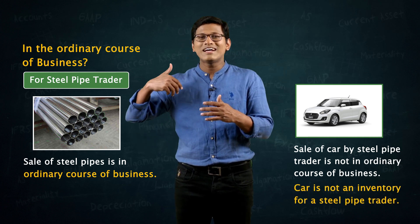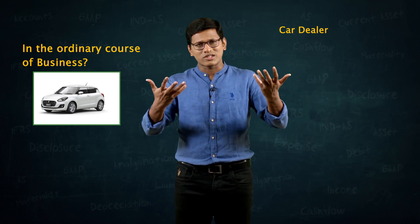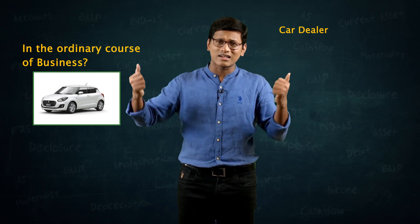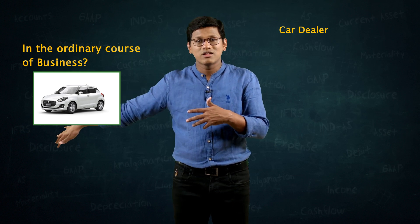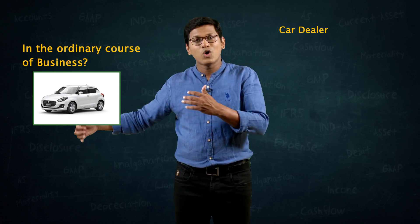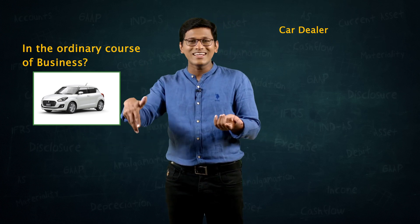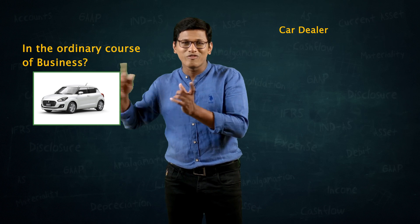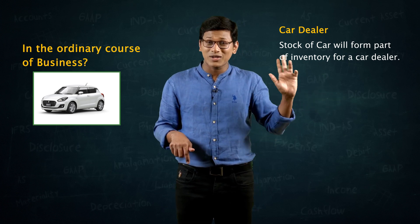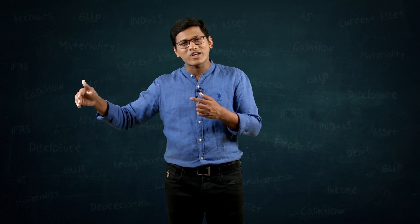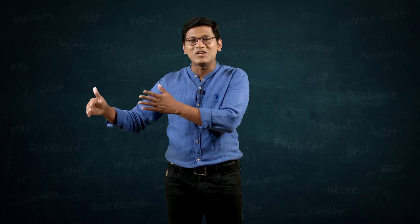On the other hand, imagine there is a car dealer company. This car dealer has an inventory of cars. When that person buys 100 cars, you don't assume it is for personal use — you assume those cars are for selling because that person is a car dealer. So for a car dealer, the stock of cars will form part of inventory, and when a car is sold, that sale is recorded in the P&L account. If the stock you have is something sold in the ordinary course of business, then that item will be shown as inventory of finished goods.